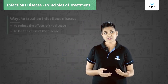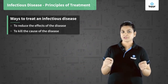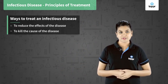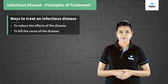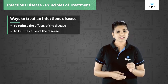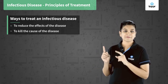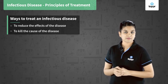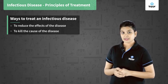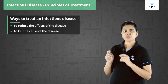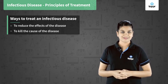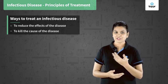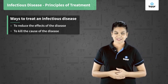A disease can be treated in majorly two ways. The first is to reduce the effects of the disease, and the second is to kill the cause of the disease. Let us see each of them in detail.